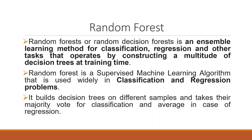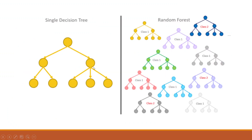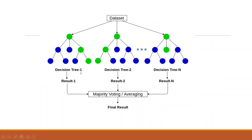Let us understand this concept on the next slide. When you run decision trees, it is possible to get different results from different trees, making it difficult to reach a common consensus. That is why the concept of the random forest algorithm was introduced. Here we run a single decision tree either 500 or 1000 times. A collection of more than 500 or 1000 trees is collectively known as a random forest. Each tree may give a different result, so to reach a common consensus we use either majority voting or averaging.